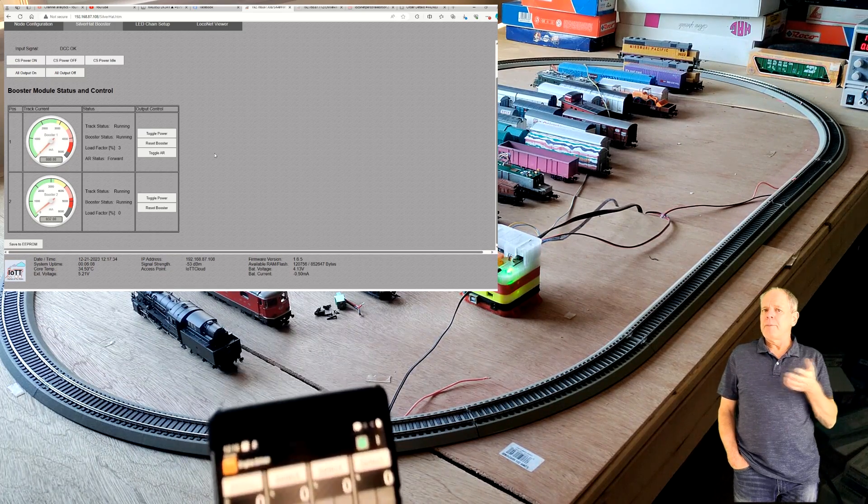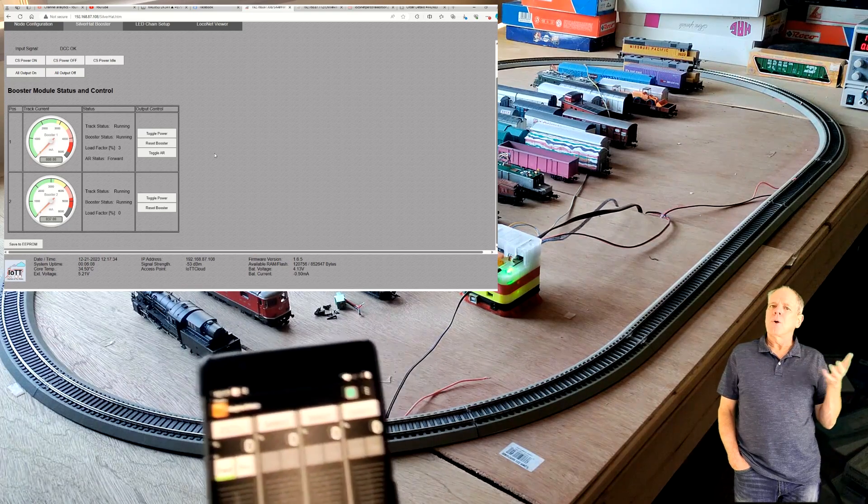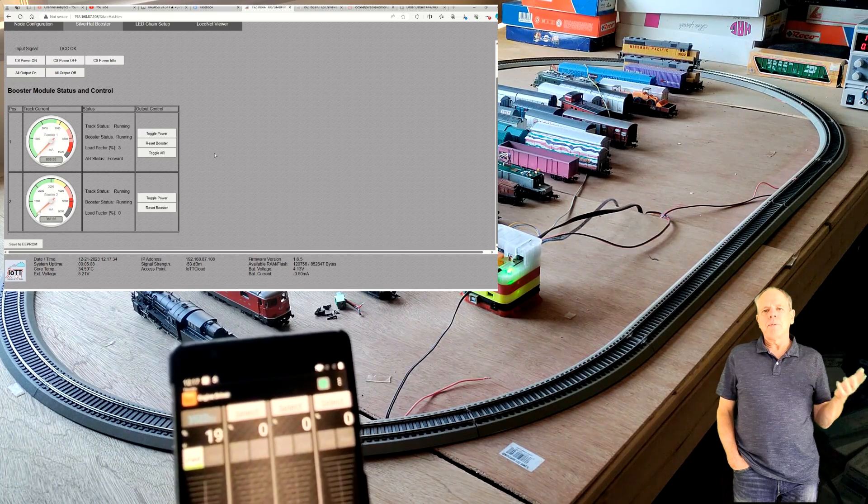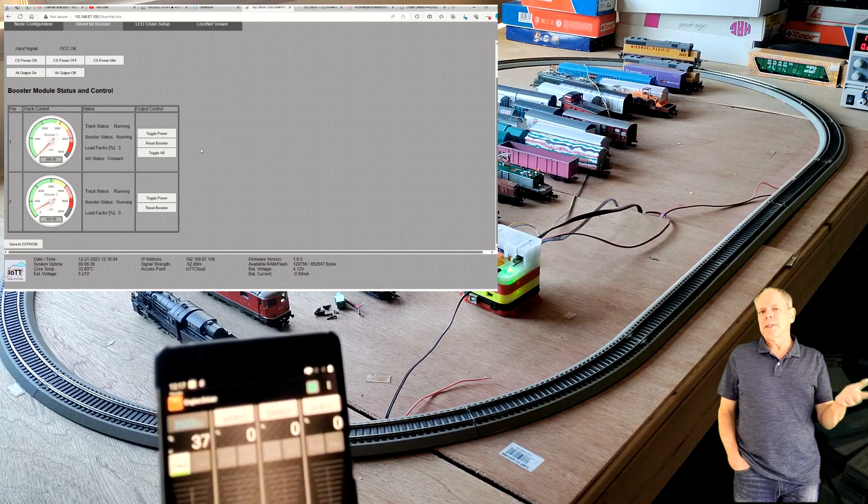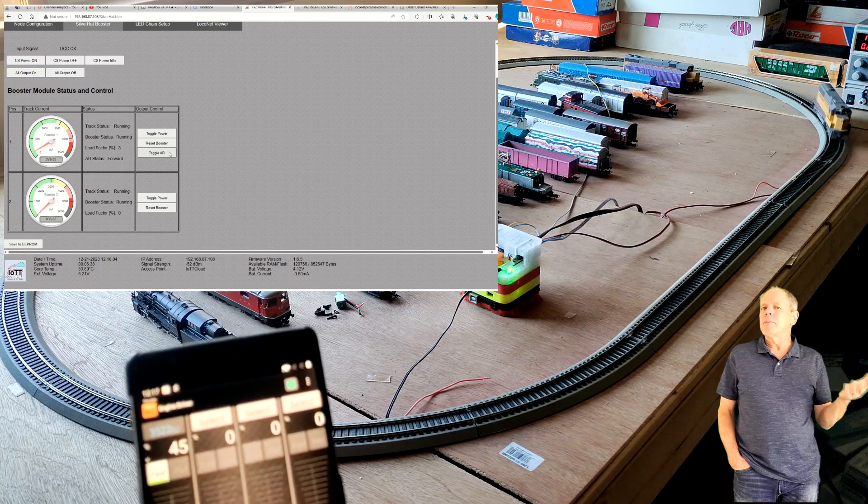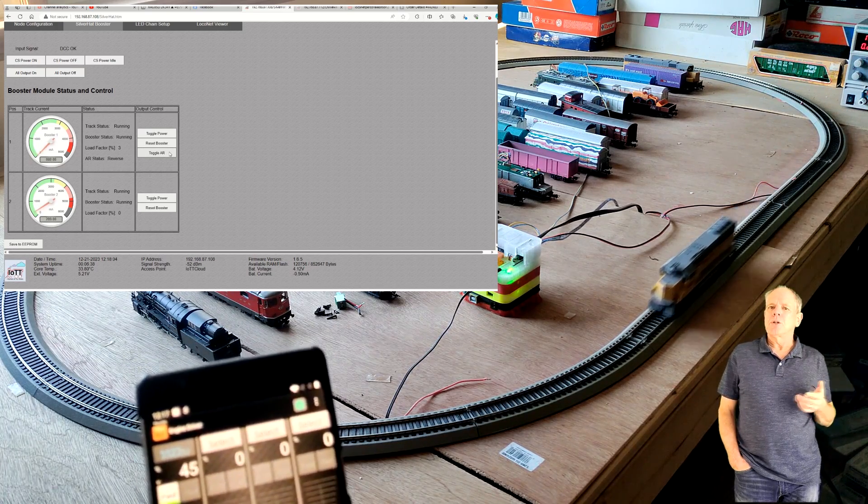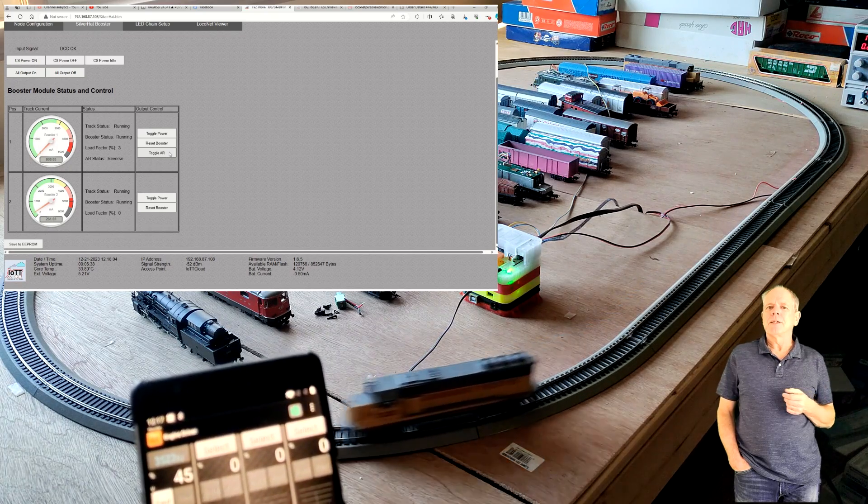The same I do on the way back and keep in mind, instead of me clicking the toggle AR button, the same could be achieved by a block detector or optical sensor and the booster could adjust the polarity automatically based on train movements or even the position of the turnout leading into the reversing loop.